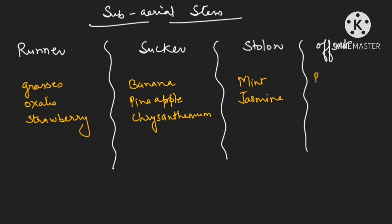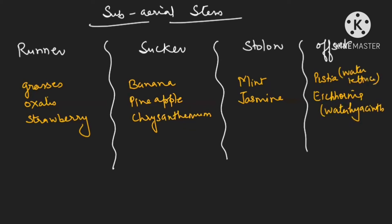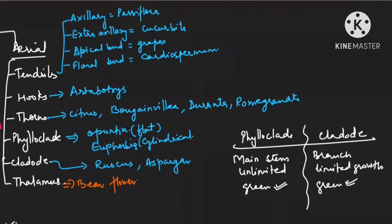Offset examples are Pistia (also known as water lettuce) and Eichhornia (also known as water hyacinth). All these examples are important from the NCERT point — please learn them properly. For aerial stem modifications — tendrils: axillary bud makes tendril in passiflora, extra-axillary in cucurbits, apical buds in grapes (Vitis vinifera), and floral bud in Cardiospermum.